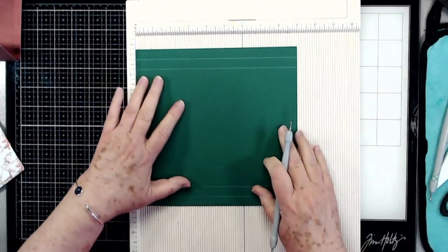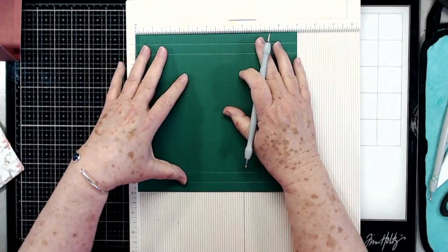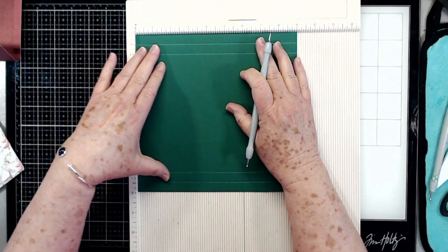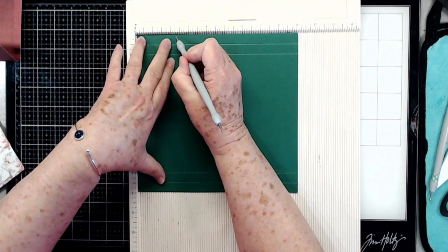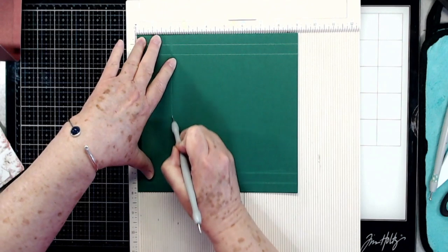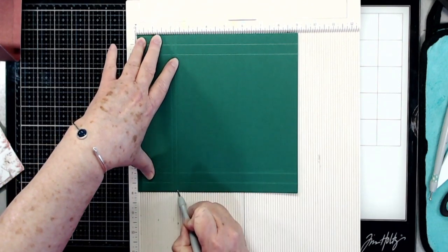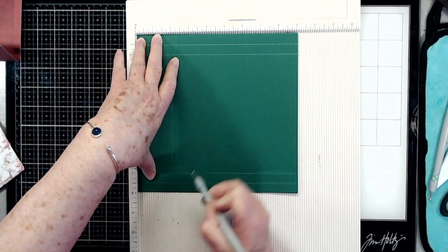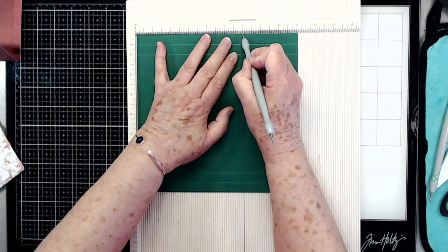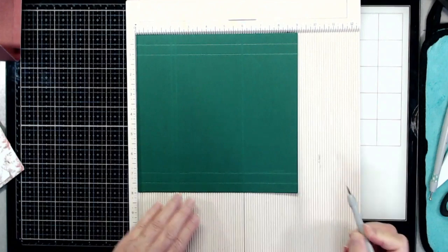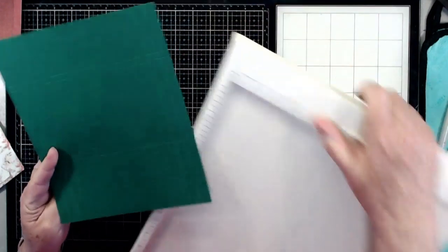Then you're going to turn it one turn to the 9-inch side, and you're going to score at two, at two and a quarter, and at six. That should get it right there.